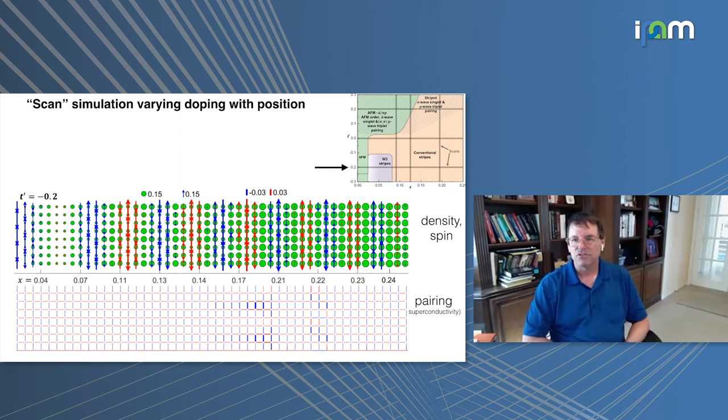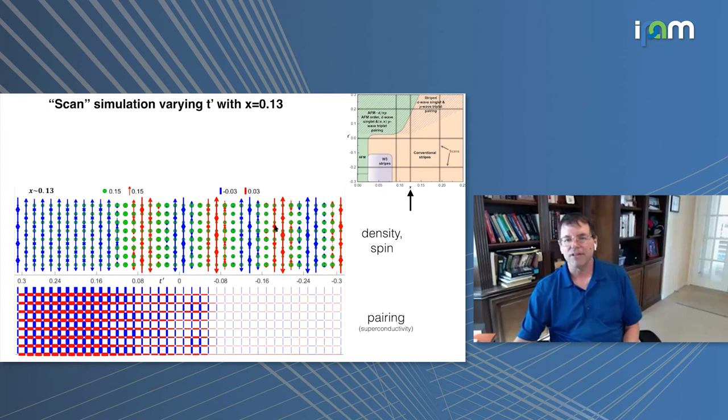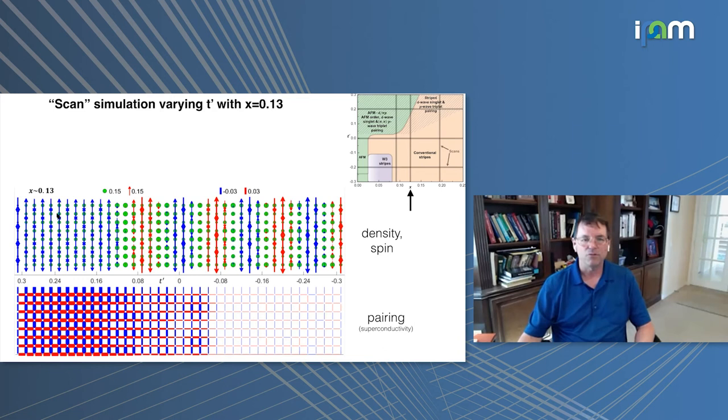We can choose a vertical direction to do a scan. This is now varying T prime. You really see the effect of the T prime on the pairing. Here, this is going up in this region at doping of 0.13. It starts with T prime positive, so we're in this uniform anti ferromagnetic D wave phase at first. We go into stripes. The stripes exist a little while with pairing when T prime is positive. And as soon as T prime goes negative, they die off. We're seeing a very strong effect of the T prime directly causing this effect on the pairing.